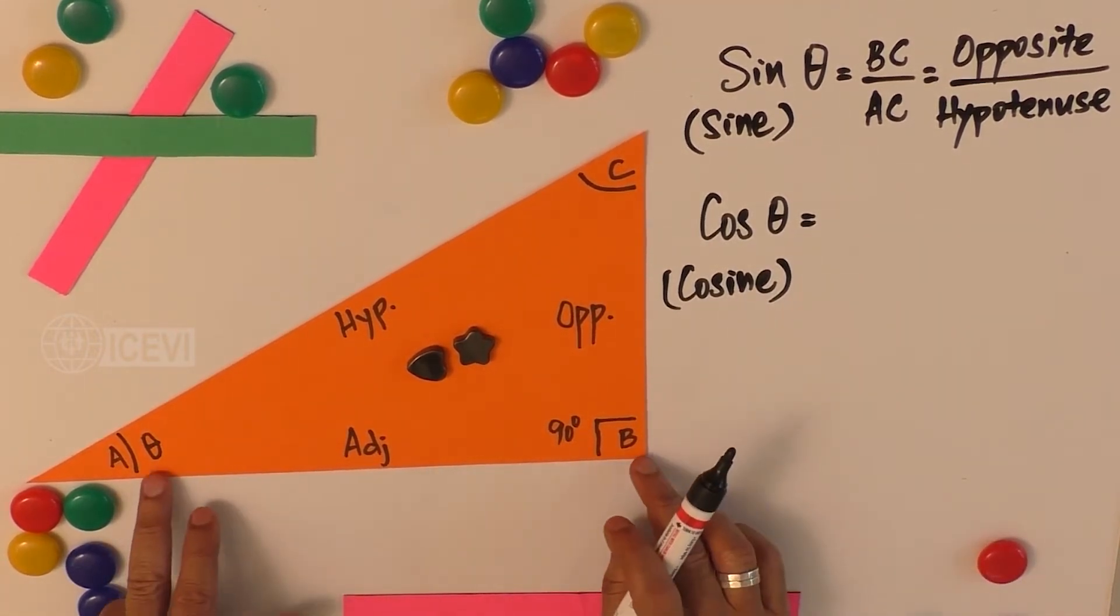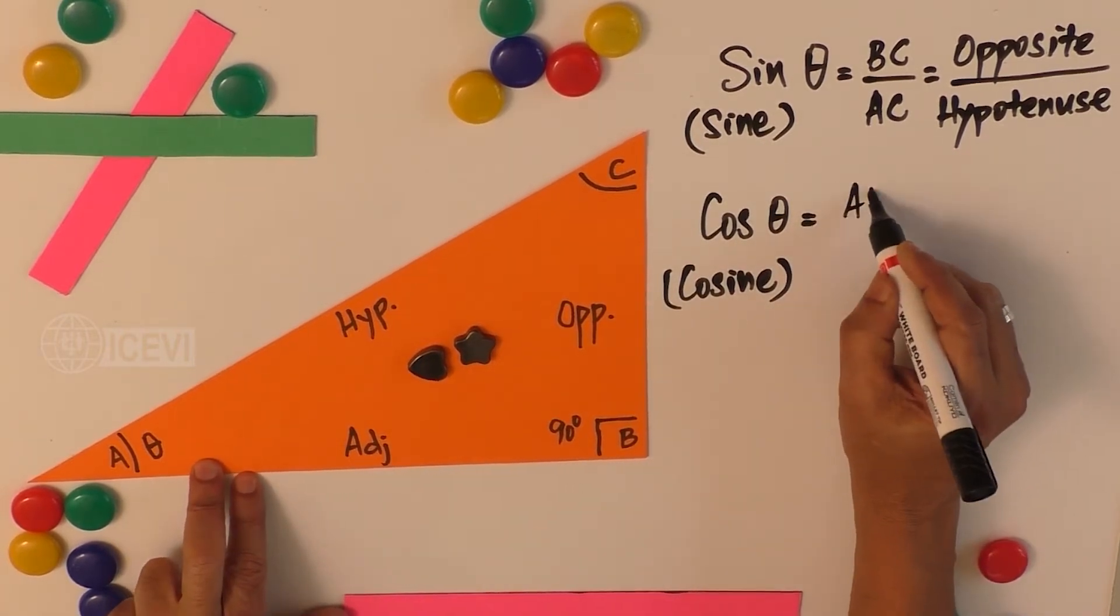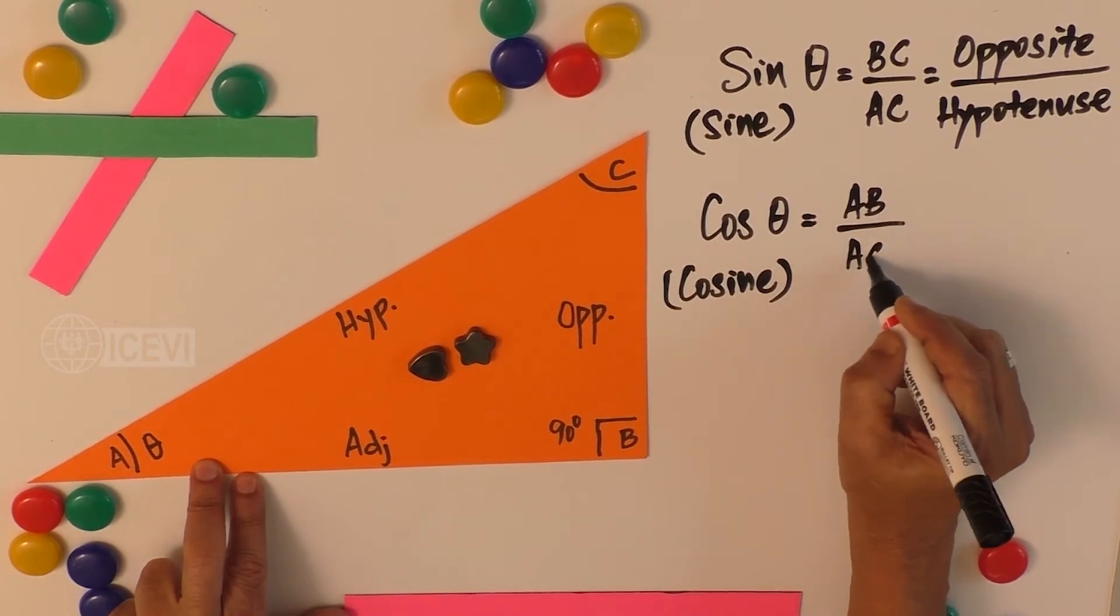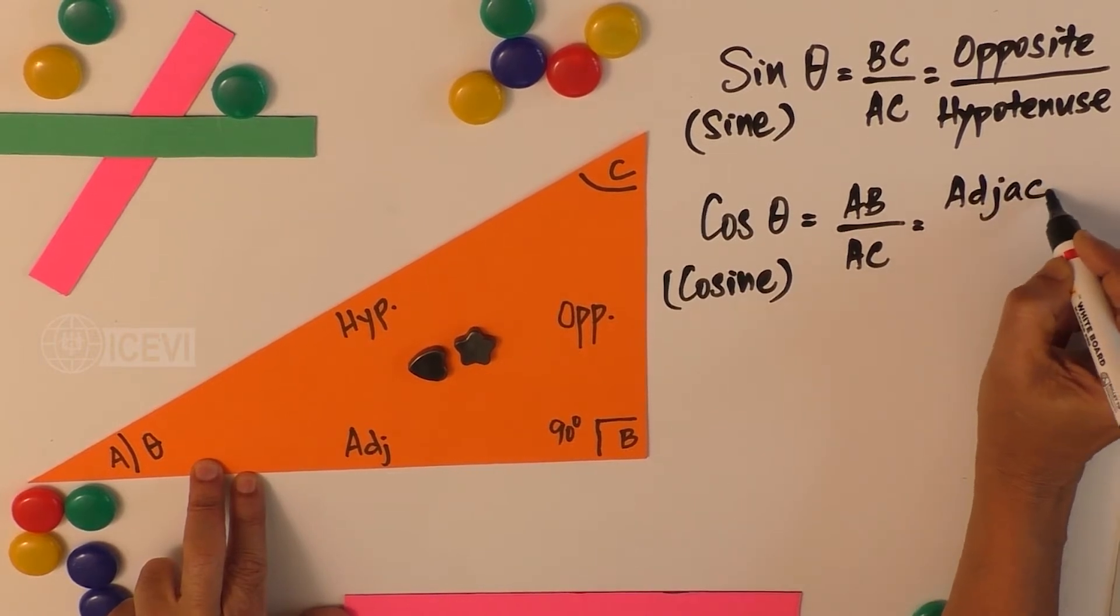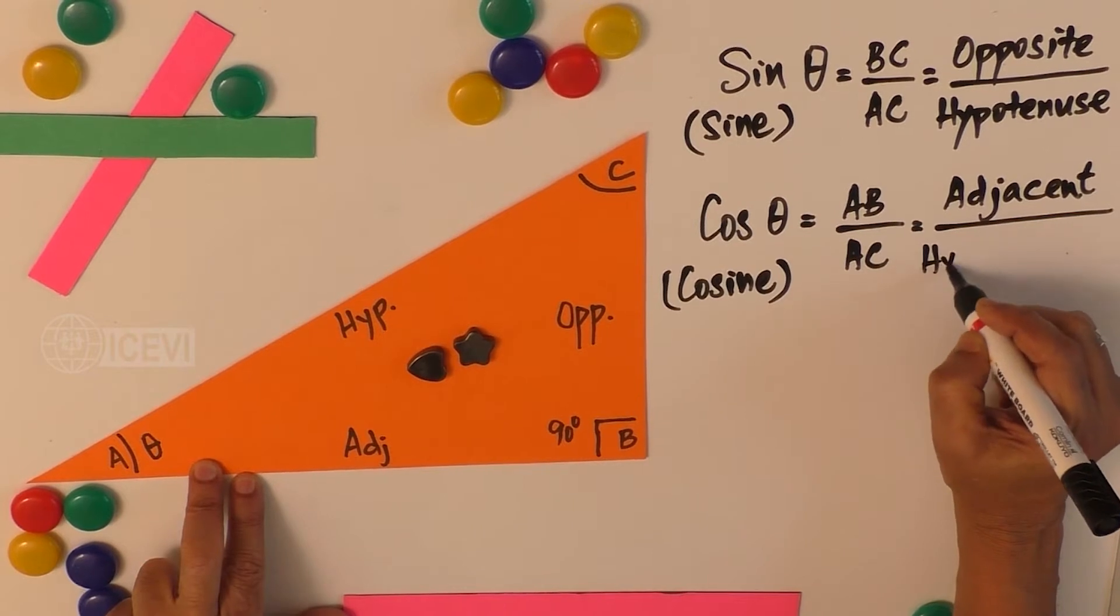Now, cos theta is defined as AB divided by AC, that is, adjacent divided by hypotenuse.